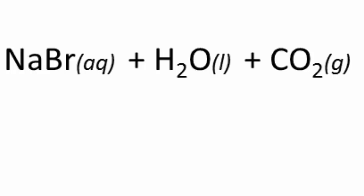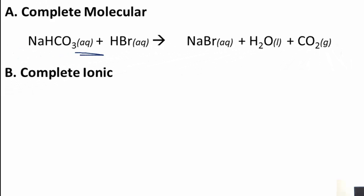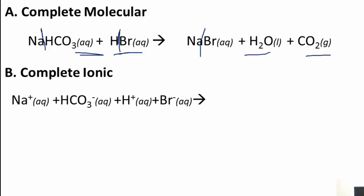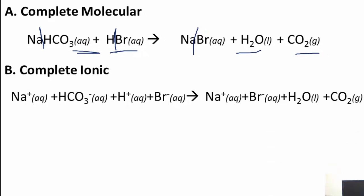The complete ionic equation looks quite different this time because the baking soda is aqueous rather than solid. That means we split it into Na⁺ and HCO₃⁻. Hydrobromic acid is a strong acid, so it splits into H⁺ and Br⁻. On the product side, sodium bromide is completely soluble, so it splits into Na⁺ and Br⁻. Water is liquid and carbon dioxide is gas, so neither is split. So the complete ionic equation has all species split up on the reactant side, and sodium and bromide separated on the product side.